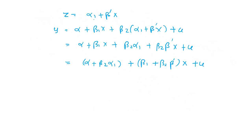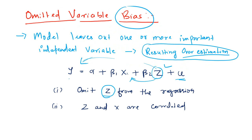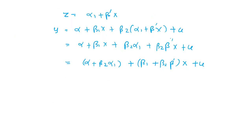Z, as I have said, is correlated with x. Let us say z is related to x like this: z = alpha 1 plus beta dash x. We substitute z in the equation of y, where y = alpha plus beta 1 x plus beta 2 z plus the error term, and in the place of z we put alpha 1 plus beta dash x plus the error term.